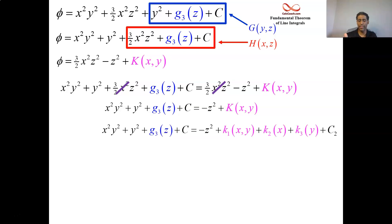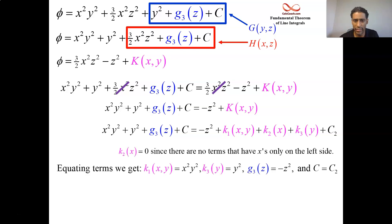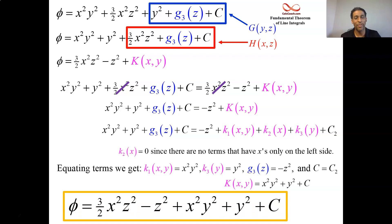This k of x, y could be three different guys plus a constant. And now we do our arguing. There's no x term only on the left-hand side. So that k2 is zero. The function of x and y, k1, that's got to be x squared, y squared. The function of k3 of y, that's got to be y squared. The function g3 of z, that's got to be negative z squared. And the constants have to be equal. So you know exactly what k is. You know exactly what phi is. Wow, that was too much. Hopefully you didn't watch that.